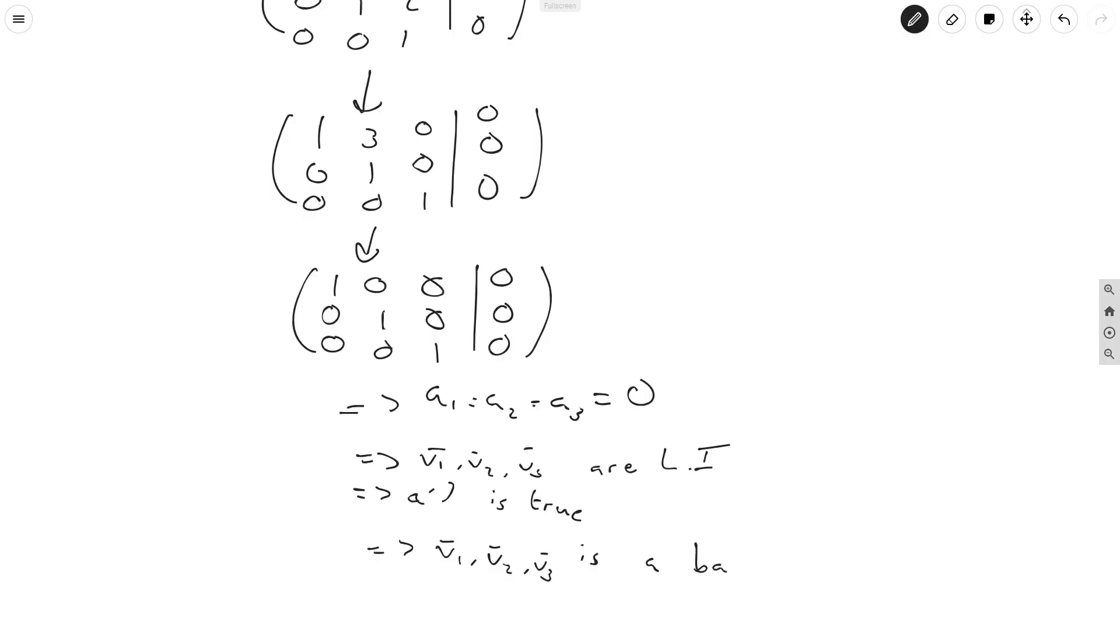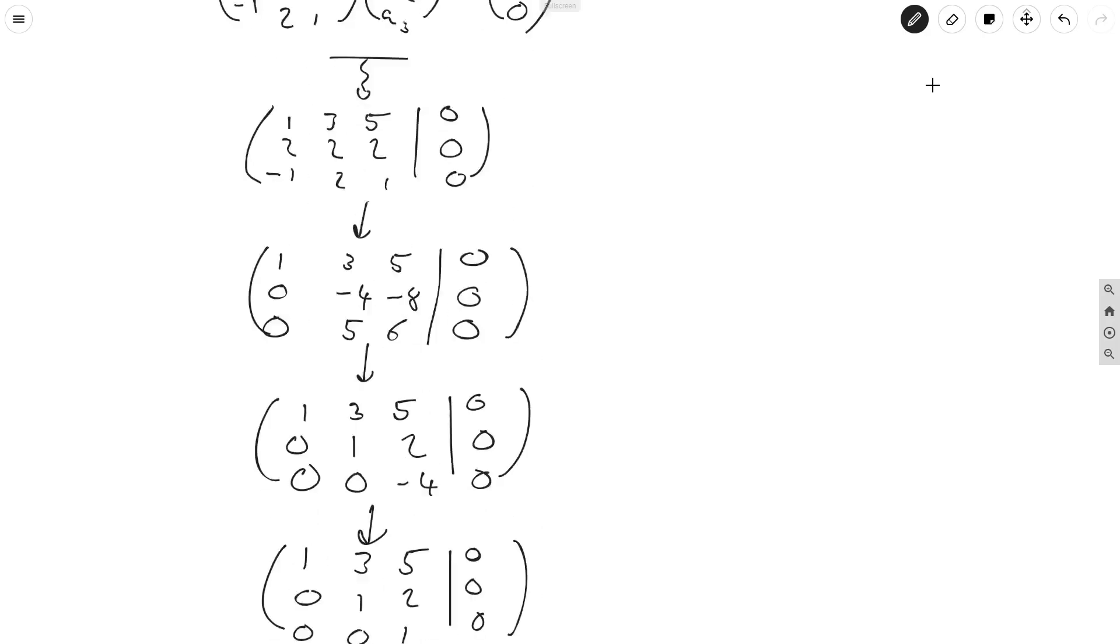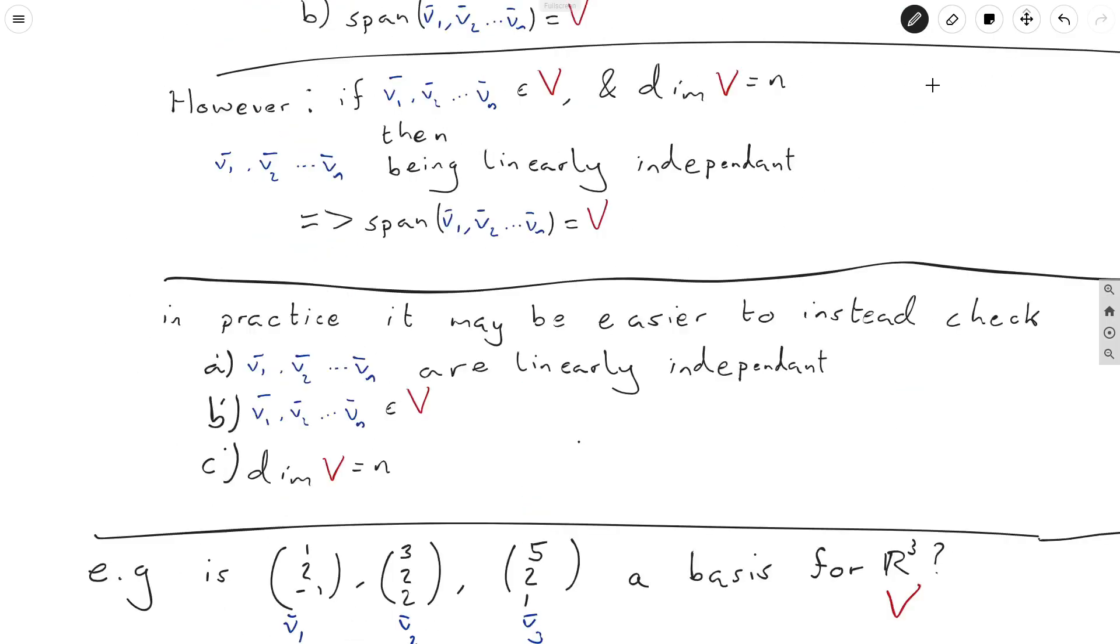Now, to be clear, if you're going to give this answer in an exam or an assignment or something, I would recommend being very explicit in this property. I'd recommend writing this down somewhere on your answer, that if v1 to vn are in V, and the dimension of V is equal to n, then linear independence implies that the span of these vectors is equal to V. Because this is something that does need to be stated, this definition here is not the standard definition of things you need to check for something to be a basis, so I would definitely recommend making this argument on any answers you give. But once you do, these three conditions are quite easy to check, as we've just seen.